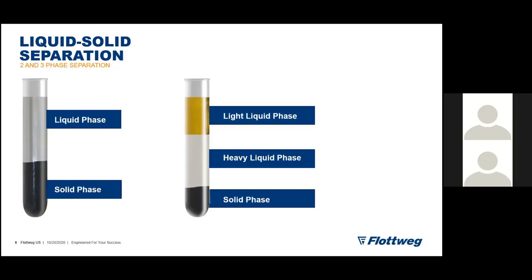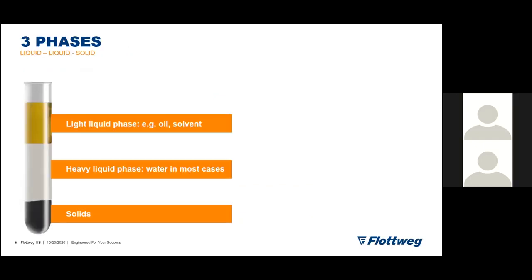Two-phase separation refers to one liquid phase and one solid phase — water/solid, water/clay, water/sand, etc. Three-phase separation has two different density liquids — for example, oil and water — plus one solid phase. The light density phase could be a solvent or oil, and the heavy density phase is in most cases water.